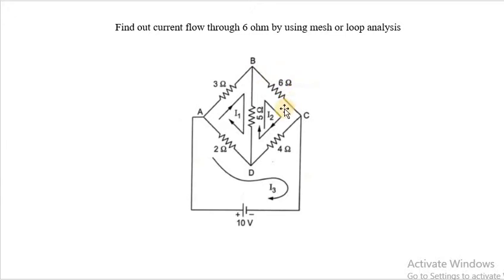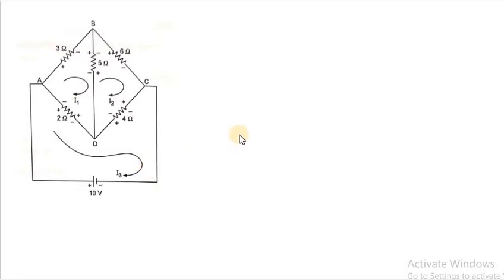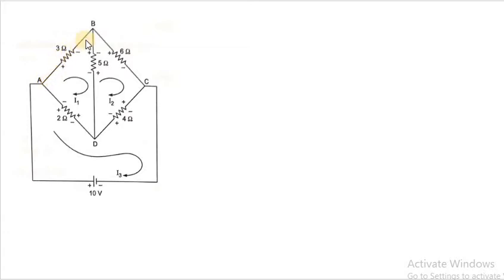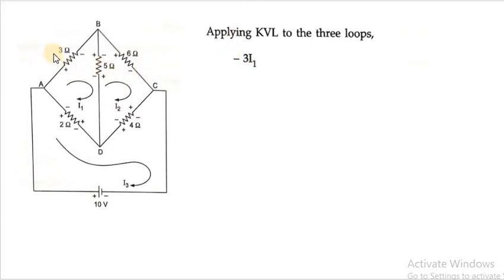Now we apply loop analysis to loop number 1. We move clockwise from A to B, B to D, and D to A — the same direction as I1. Since current and motion are in the same direction, the voltage drop across the 3 ohm resistance is minus 3 I1. Moving B to D across the 5 ohm resistance with current I1 also clockwise, the drop due to I1 is minus 5 I1.